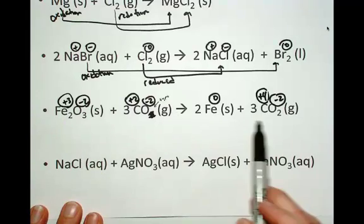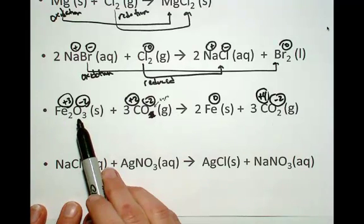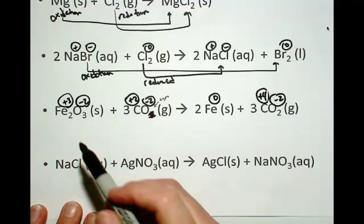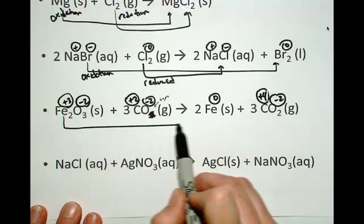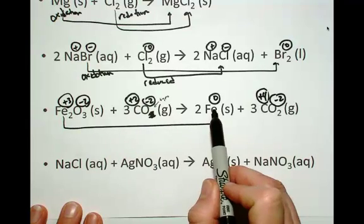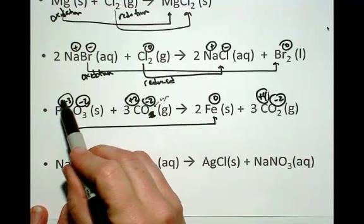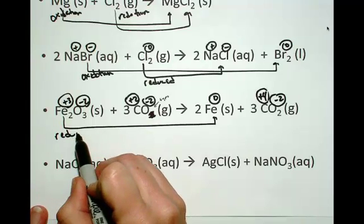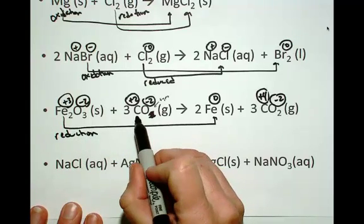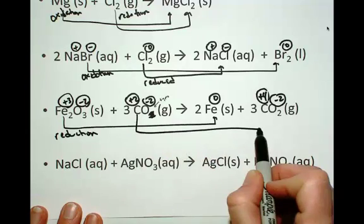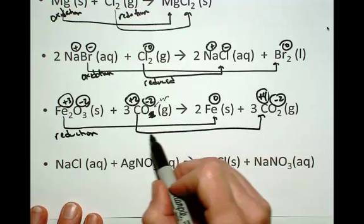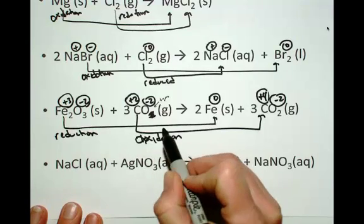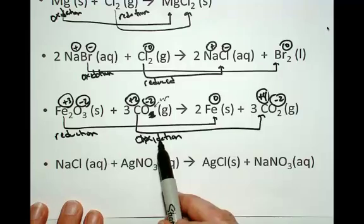You look again to see where the oxidation numbers are changing. The oxygen isn't changing, but the iron and carbon are. The iron is going from a plus three to a zero, so it must be gaining electrons, that's reduction. The carbon is going from a plus two to a plus four, getting a higher oxidation number, so it must have lost electrons, that's oxidation. The iron oxide is the oxidizing agent, carbon monoxide is the reducing agent.